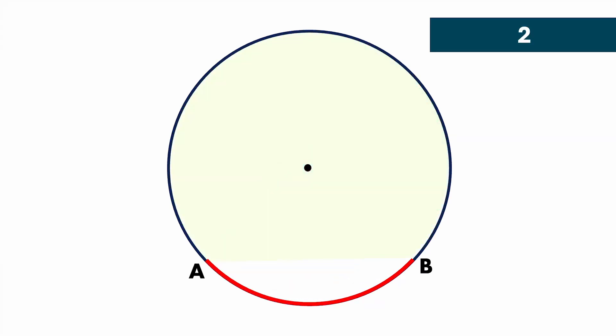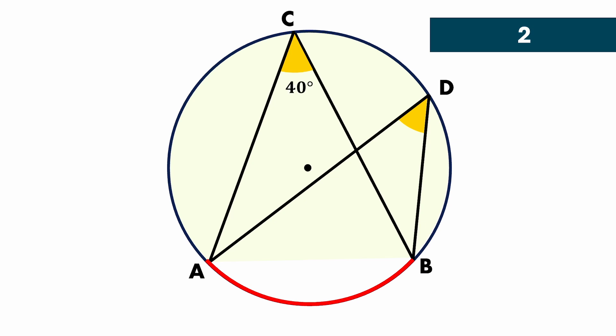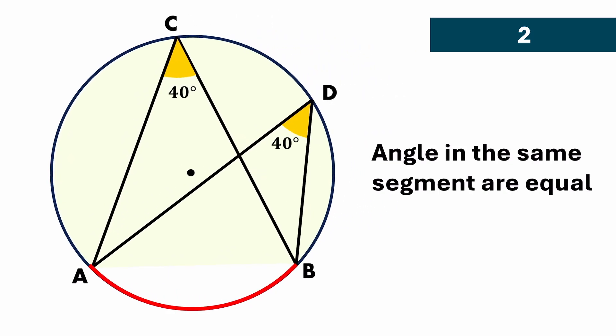Now let's look at the next property of a circle. From arc AB, if you draw angle ACB and similarly another angle ADB, then the angles will be equal. That means if angle ACB is equal to 40 degrees, then angle ADB will also be equal to 40 degrees. So angles in the same segment are equal.